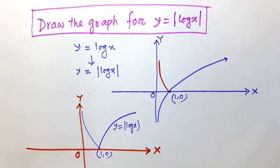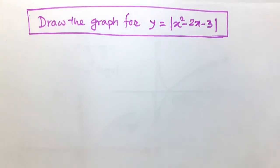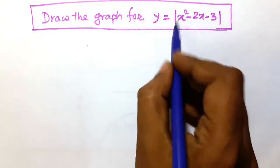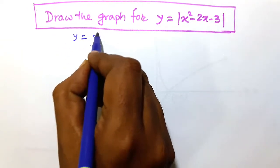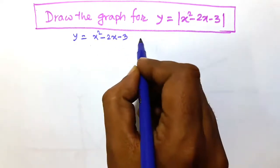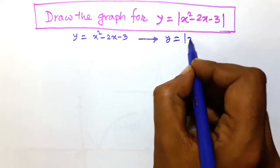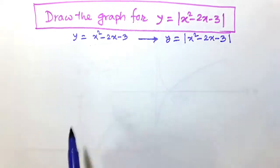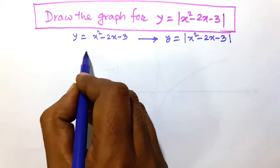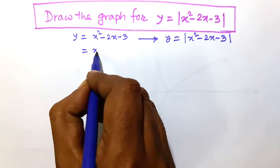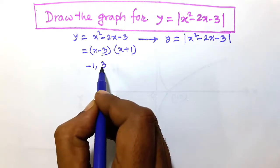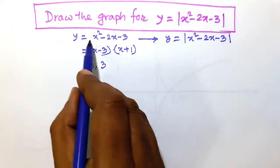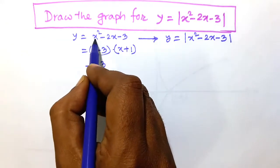Now I shall show the graph of y is equal to x squared minus 2x minus 3, and similarly y is equal to modulus of x squared minus 2x minus 3. We draw y is equal to x squared minus 2x minus 3 first. Factorizing gives x minus 3 times x plus 1, so the critical points are minus one and three.